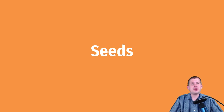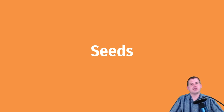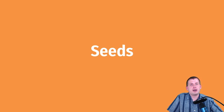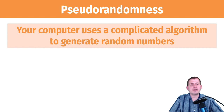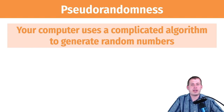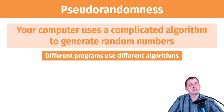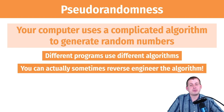Seeds are a more computer science-y technical thing you don't need to fully understand — you just need to know conceptually why we use them. When your computer generates a random number in Excel, R, or any program, it uses a fancy algorithm that starts with some initial number, runs through many iterations, and produces what's called pseudo-randomness. You don't get true randomness because you're starting with a given number.